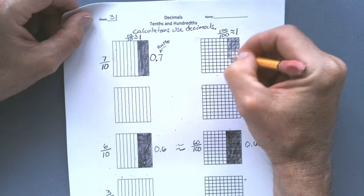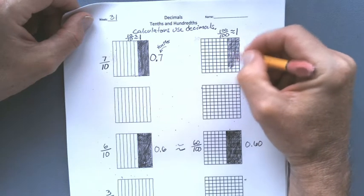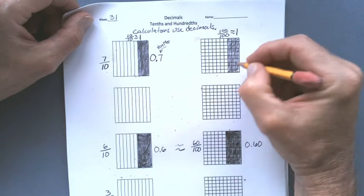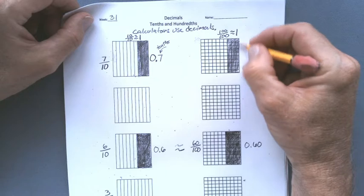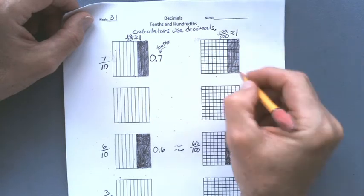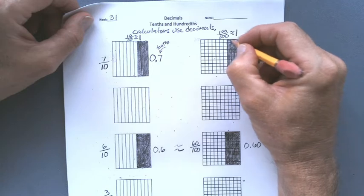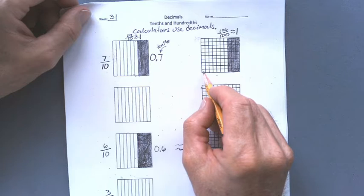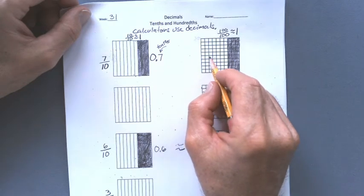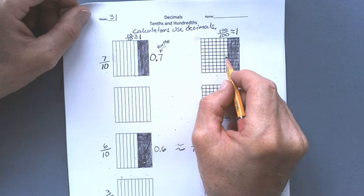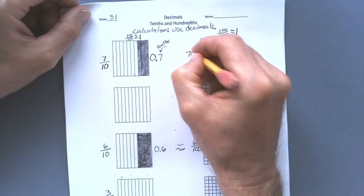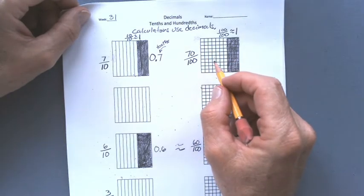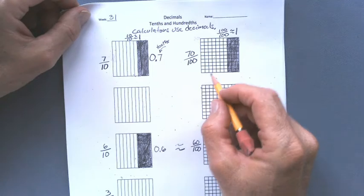But you know what? Instead of having seven tenths, you're going to find something unusual here. You're going to find ten because there's ten now divided in each one of these columns. Ten, twenty, thirty, forty, fifty, sixty, seventy. There's going to be seventy hundredths. So we're going to count each one of these one at a time to take us a while. But we can count by tens because each one of these columns is ten.